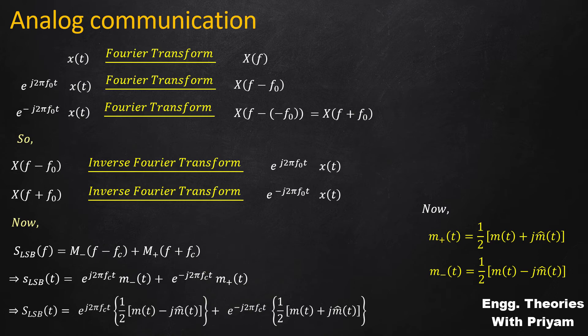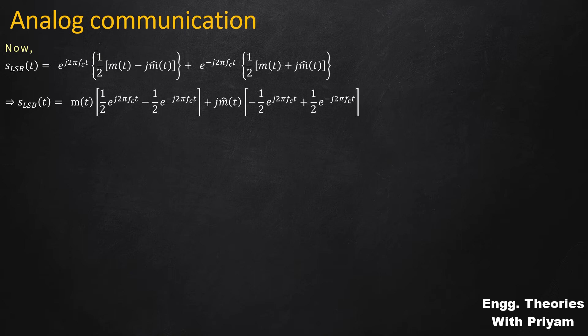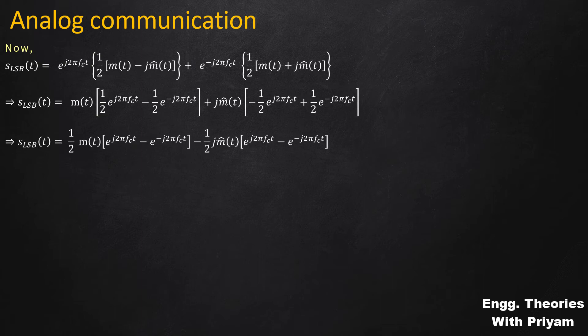Taking m(t) and j·m̂(t) common from the equation, the lower sideband SSBSC modulated signal in the time domain equals m(t)·(1/2)[e^(j2πFct) - e^(-j2πFct)] + j·m̂(t)·[(-1/2)e^(j2πFct) + (1/2)e^(-j2πFct)]. Taking (1/2) out and taking minus common from the j·m̂(t) term, the SSBSC signal becomes (1/2)·m(t)·[e^(j2πFct) - e^(-j2πFct)] - (1/2)·j·m̂(t)·[e^(j2πFct) - e^(-j2πFct)].